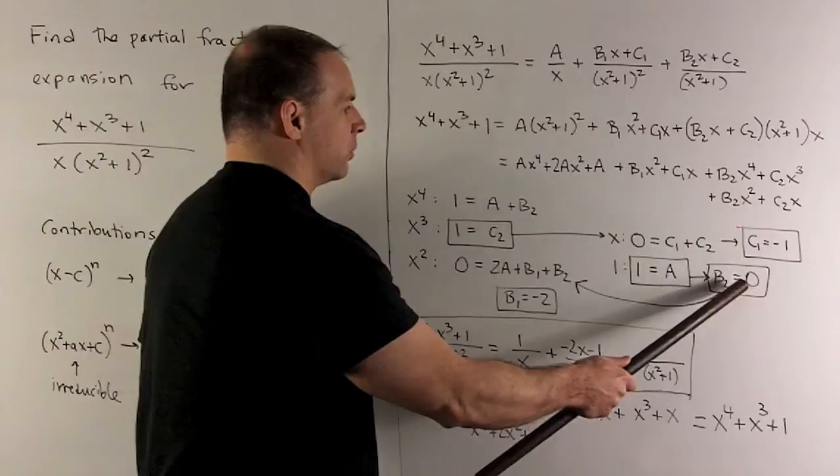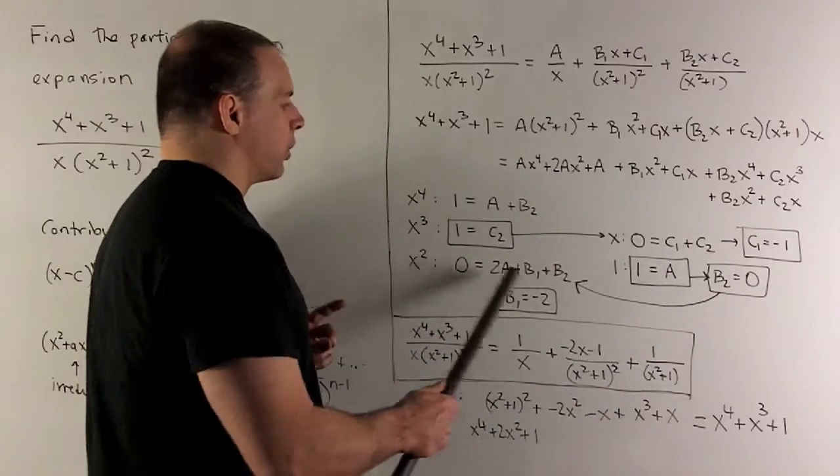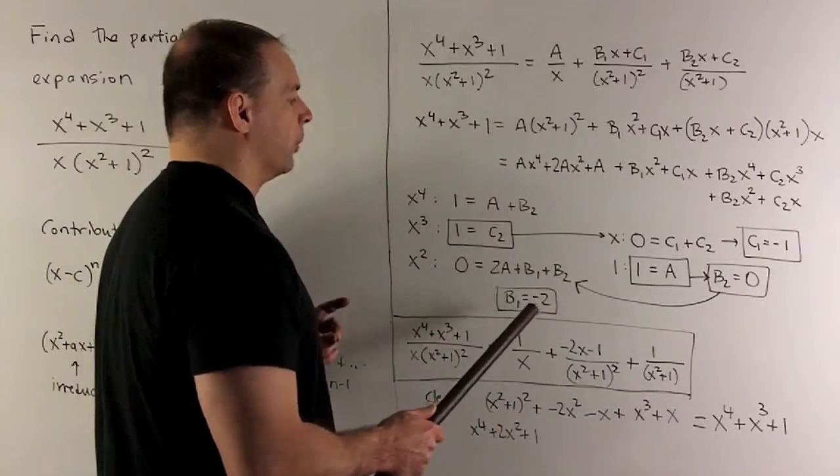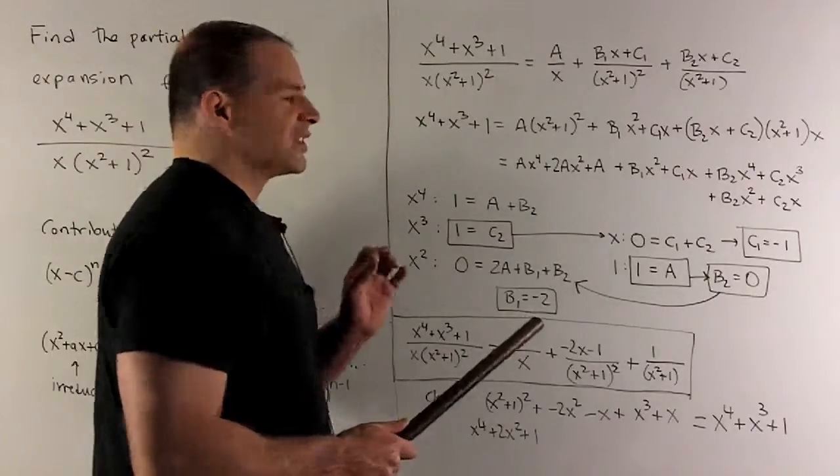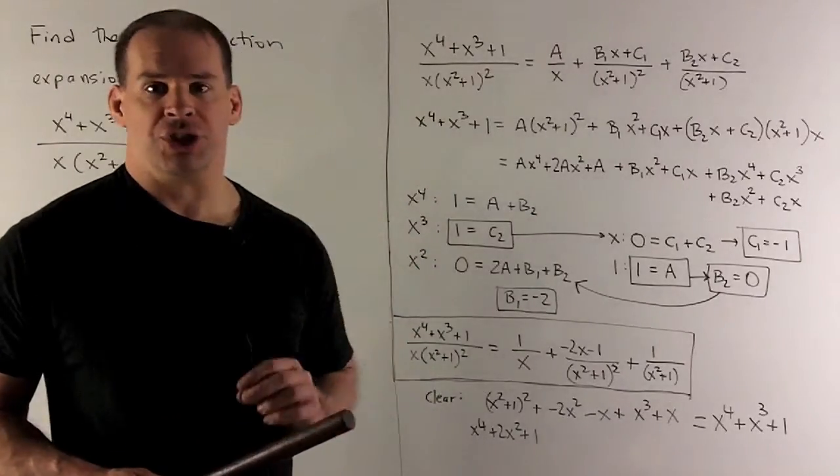If b2 equals 0, we could use our third equation to get b1 equals minus 2. So that solves for all five coefficients.